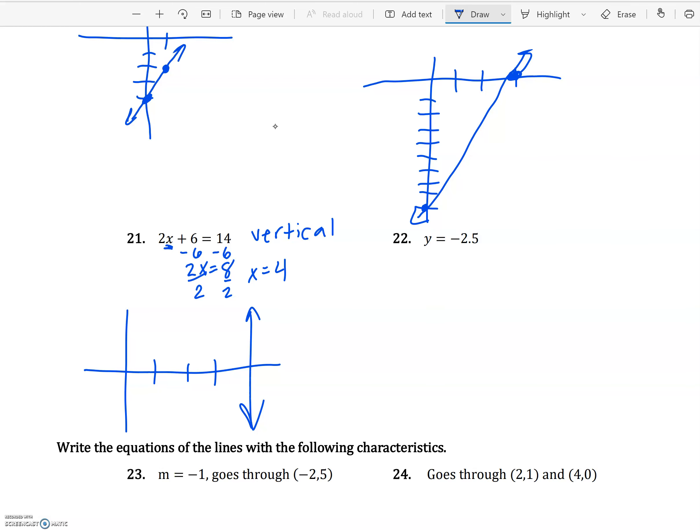Number 22 is very similar, but instead of having no y, it has no x, just a y. So that means it's going to be a horizontal line. Luckily, this one's already solved for us. So we just have to go on the y-axis down to -2.5. So there's 1, there's 2, there's 3. So I'm just going to go halfway in between 2 and 3. And there's my line, y equals -2.5.